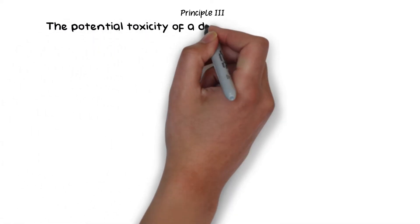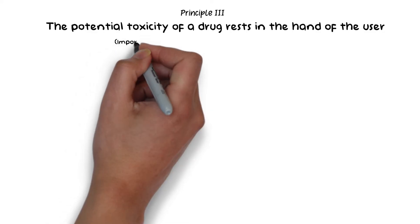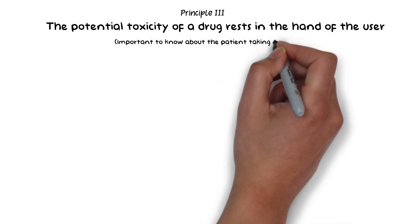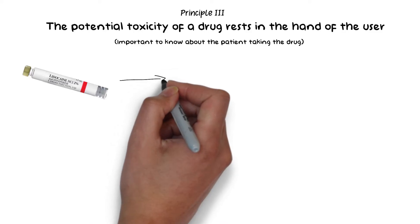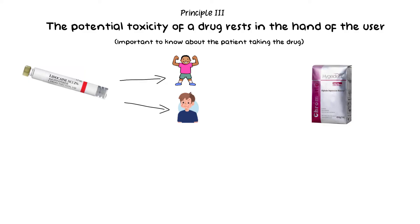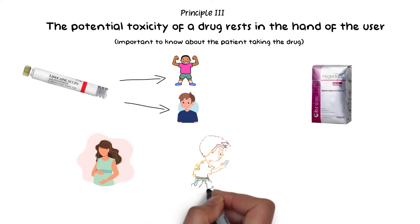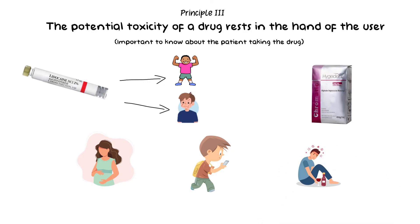The third principle is that the potential toxicity of any drug rests in the hands of the user. It is also important to know about the person to whom the drug is being administered. Individuals may react differently to the same drug — one person may not have a problem with the amide type of local anesthetic, but another may have an allergy to amide anesthetics. Another example would be alginate allergy, although that is also very rare. Similarly, a pregnant woman will require a different dose of a drug than a 10-year-old child, or a chronic alcoholic patient will require a different dose compared to someone who is non-alcoholic.